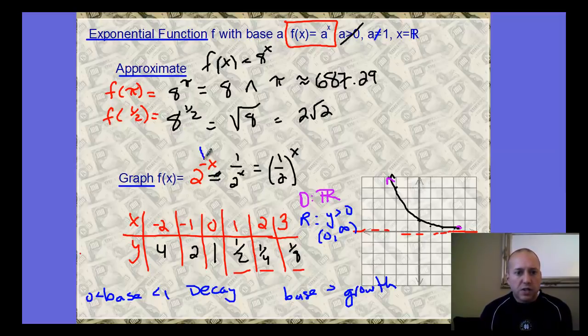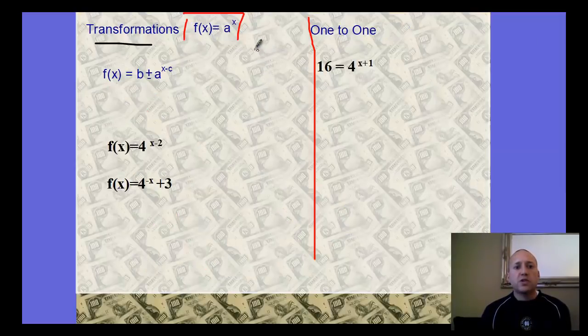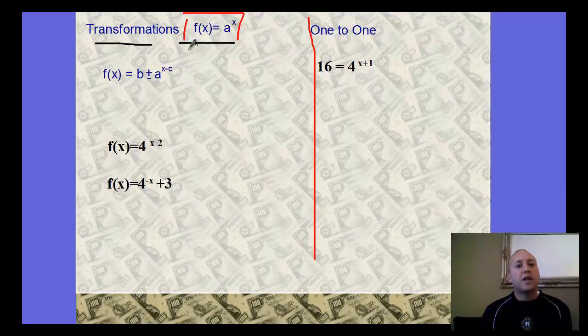I do want you to notice here that this negative here is applied to the x. It's in the exponent. So what happened to our parent function? Our parent function of this graph would actually be this function right here, this graph. So what happened to go from this graph to our second graph? It was actually horizontal reflection, reflection over the y axis.